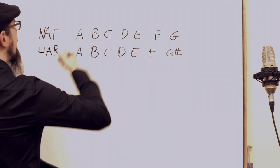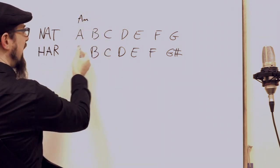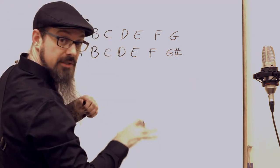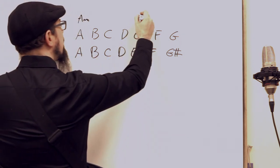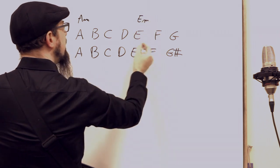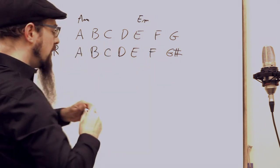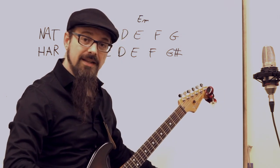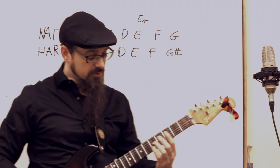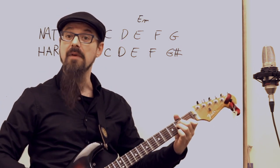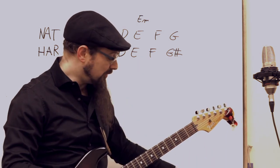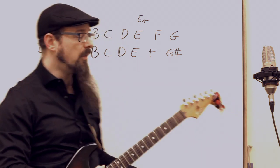In the natural minor scale, the first chord is A minor - A, C, and E. The fifth chord in classical music - the first chord and the fifth chord are the most important in composition. The fifth chord here would be an E minor chord: E, G, B. In classical music you often move between the first chord and the fifth chord, and this movement felt a little bit weak to the composers at the time.